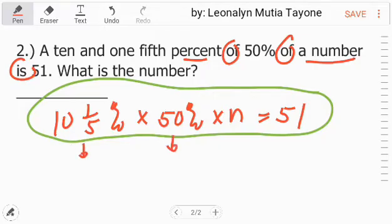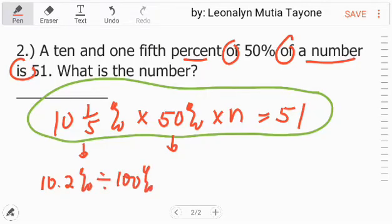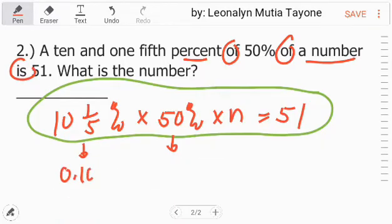Now let's convert these two into decimal. This 10 and one-fifth percent is the same as 10.2 percent. We divide by 100 percent to make it decimal or cancel out the percentage sign. Dividing by 100 percent, move the decimal to the left 1, 2, so that is point 1-0-2. This one, 50 percent, is point 5. Times n equals 51.